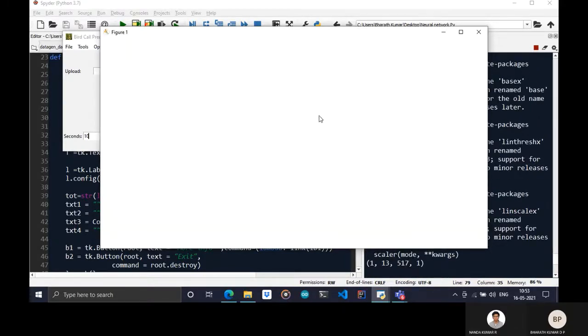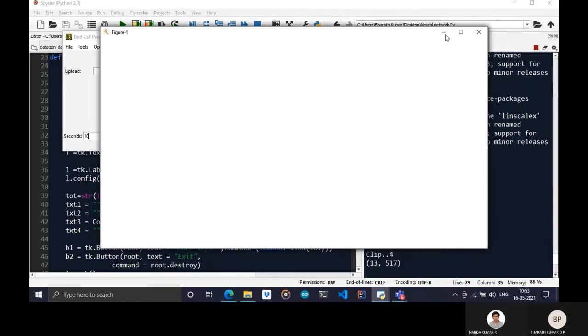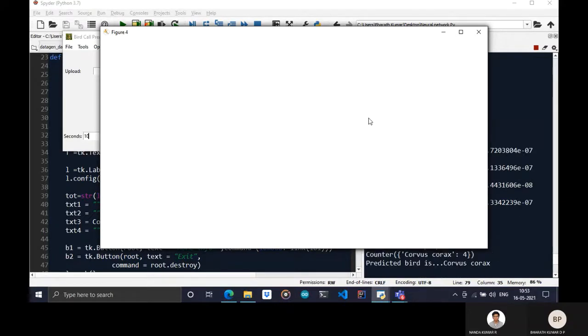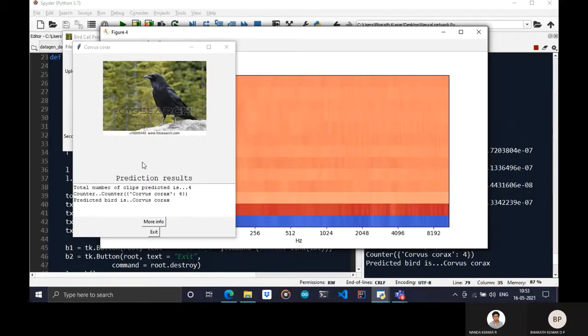As you can see, the recording is over. It has started to make the predictions. For each clip, it will show the MFCCs which are created, and using the MFCCs, it will predict the bird. This is the bird that has been predicted: Corvus corax. The image of it is shown. For more info, you need to press this button.